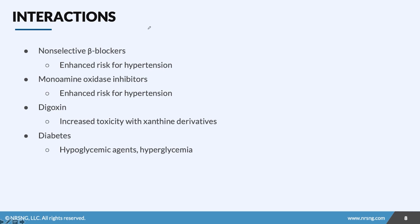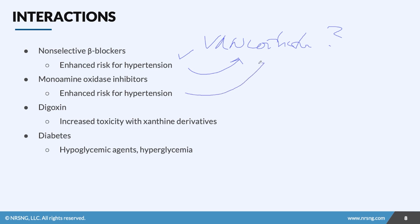The interactions are very interesting. Remember the vasoconstriction we talked about? Non-selective beta blockers are going to enhance the risk for hypertension because of the vasoconstriction. The MAOI inhibitors are also going to enhance the risk of hypertension because they potentiate that vasoconstriction that already takes place.